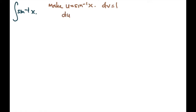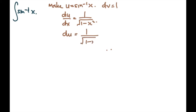So differentiating u: du/dx — differentiating inverse sine, or arcsin — we have 1 over √(1 - x²). Those who are not sure how I got 1 over √(1 - x²), please refer to my previous video on integration by substitution, where you'll see the differentiation of inverse sine. So du equals 1 over √(1 - x²) dx.